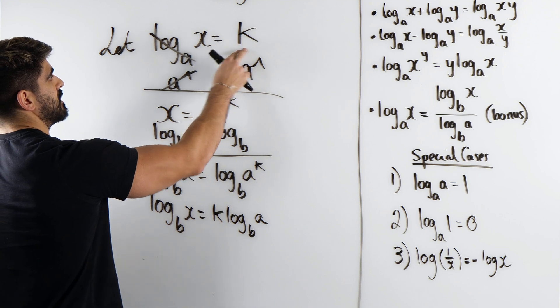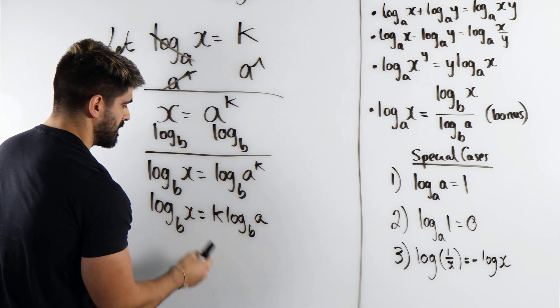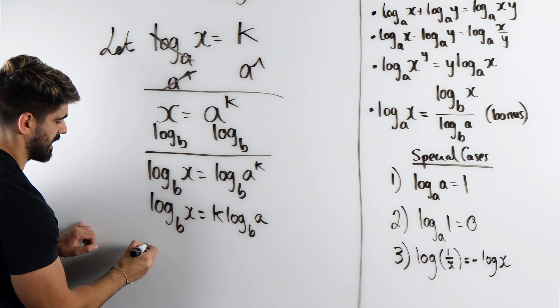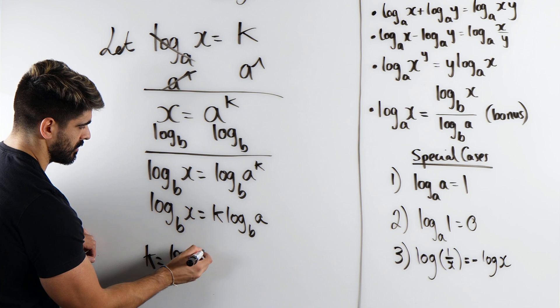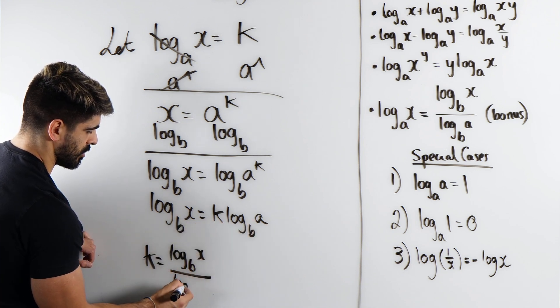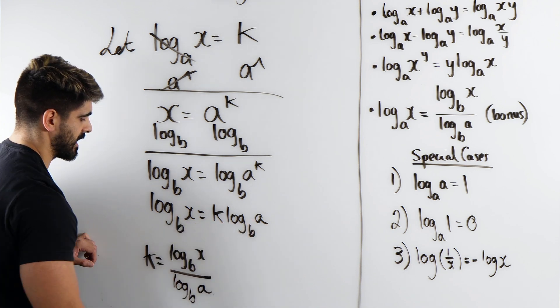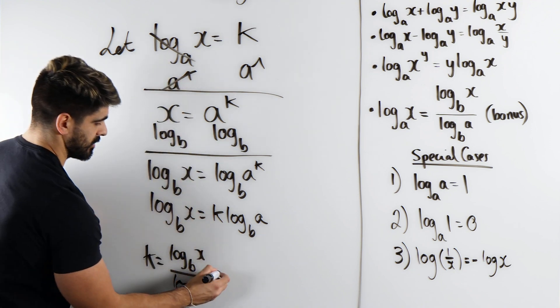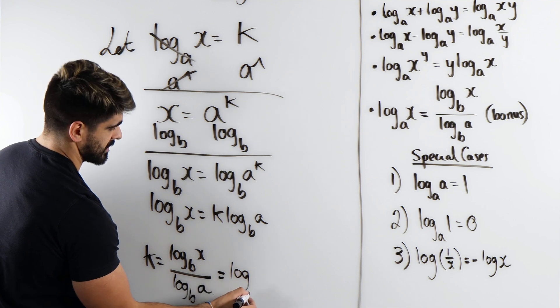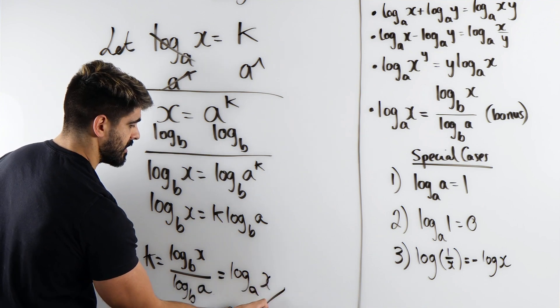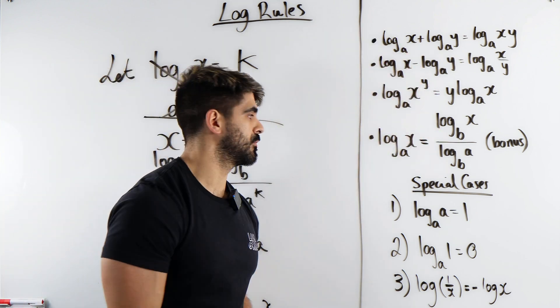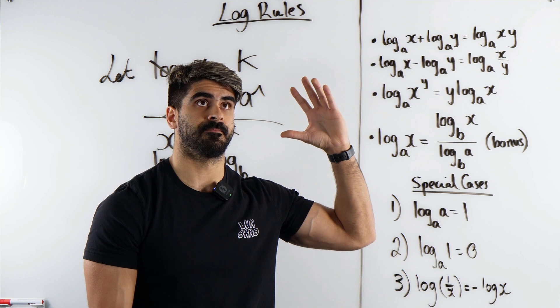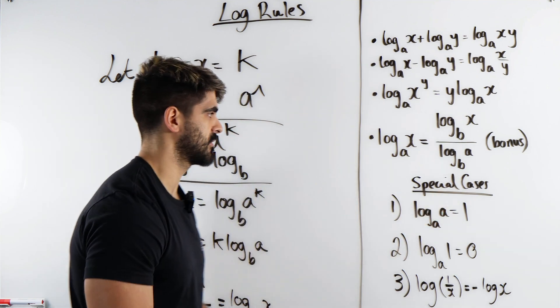So I get K log base B of A. And I want to rearrange for K because remember that was log base A of X. So I'm going to divide by this. K is log base B of X divided by log base B of A. Remember what K was. It was log base A of X. And that is proved. So these are the four main proofs, main log rules proved for you guys.